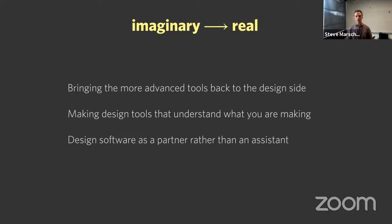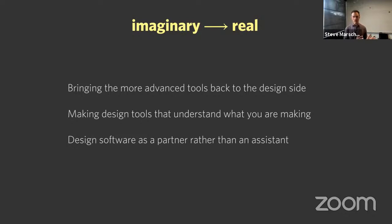What we can do with this technology is not just bring techniques for describing shape from the virtual world, but take the full understanding of properties — what things look like, how they move, how they behave — and make design tools that understand all of those things. So design tools that don't just describe shape, but describe what things really are. This kind of software can be much more of a partner than an assistant. That's the core of computational fabrication: software that works with you to design and make things.